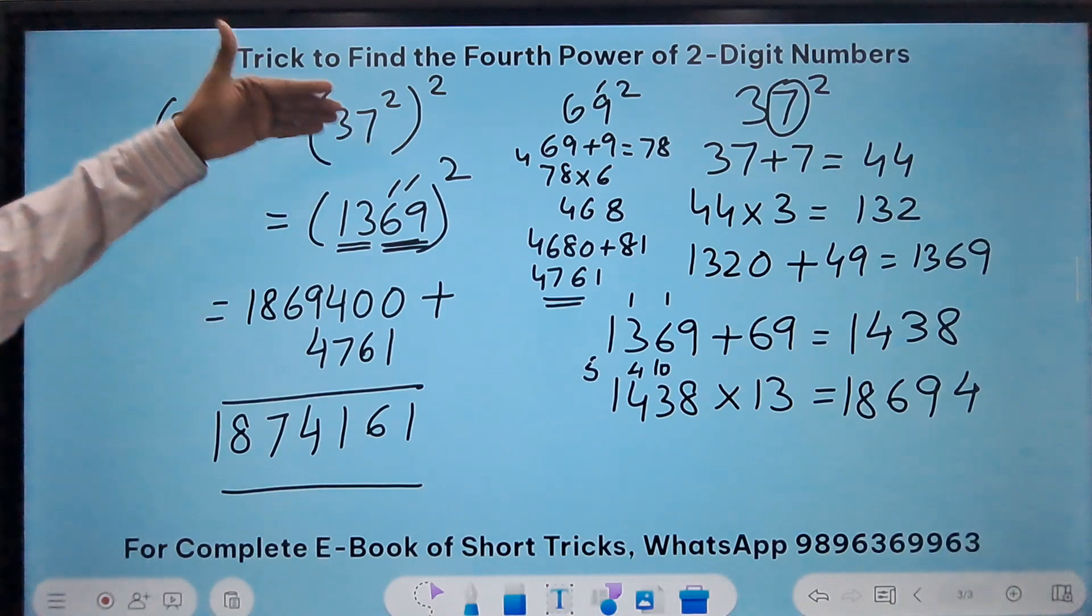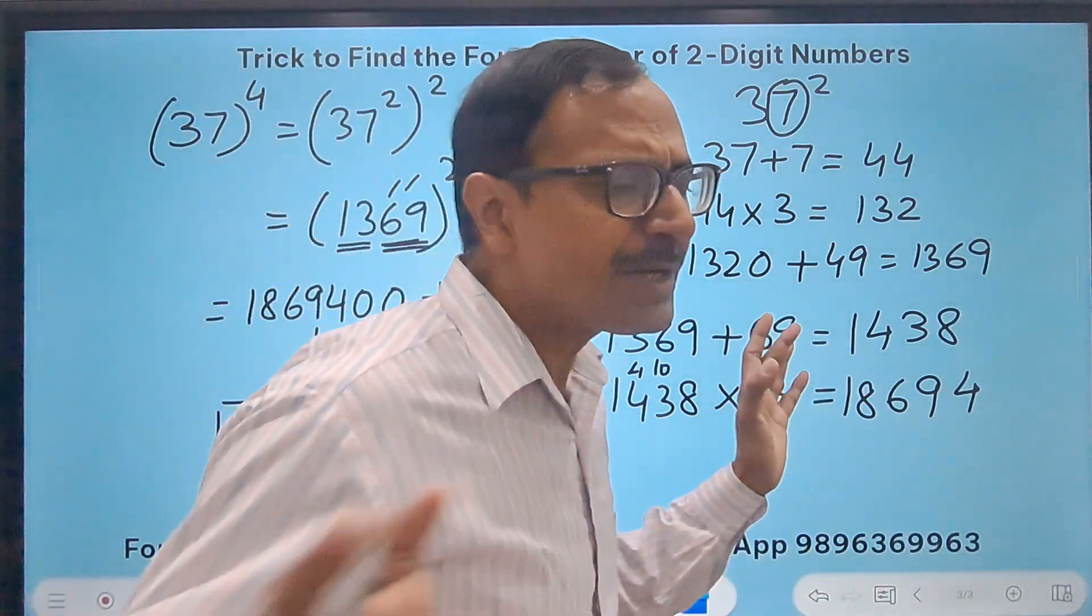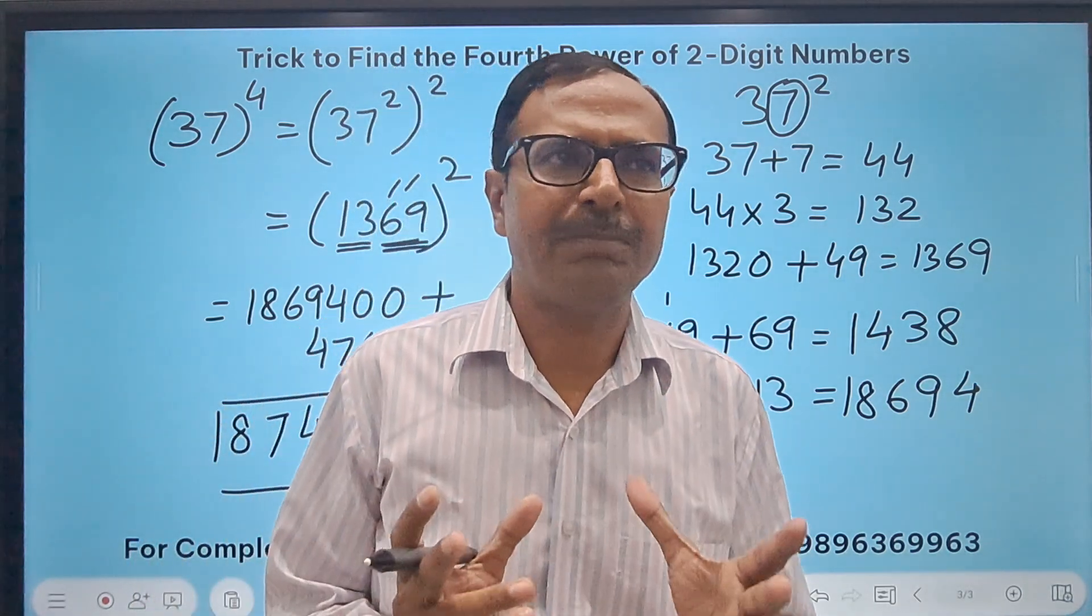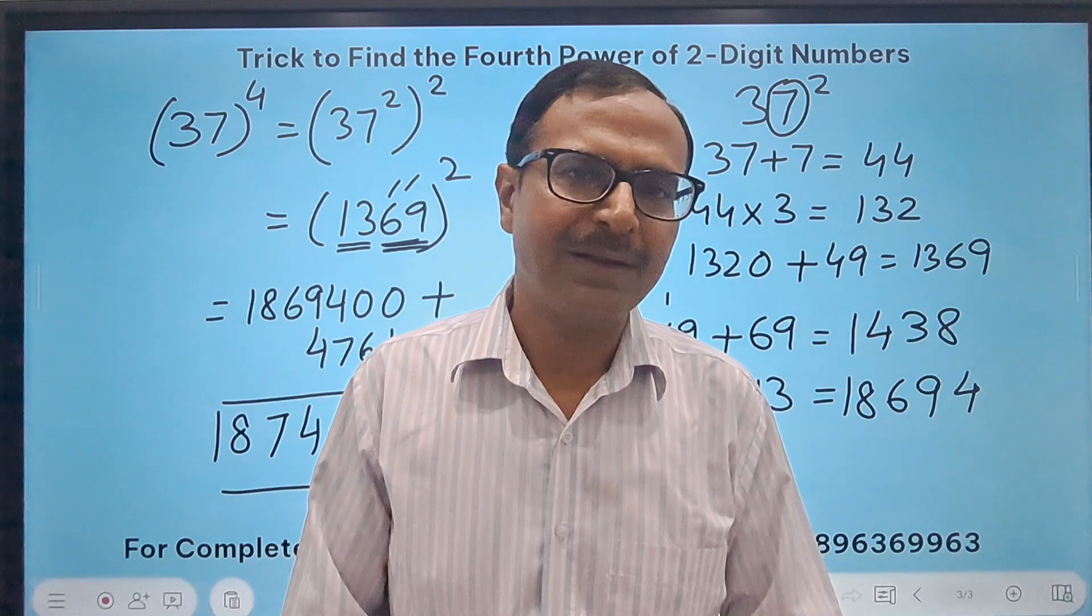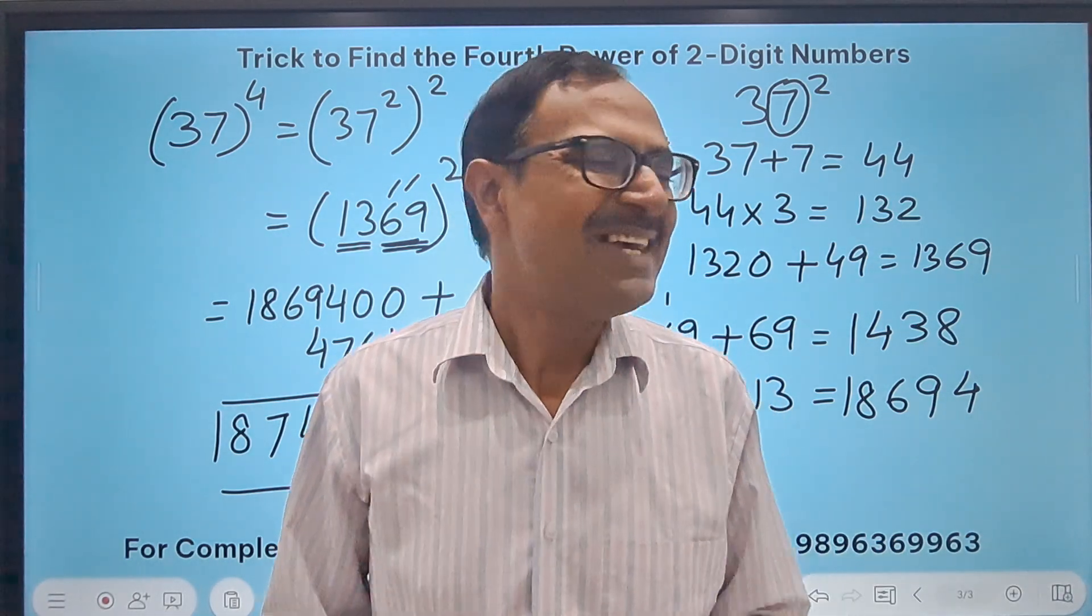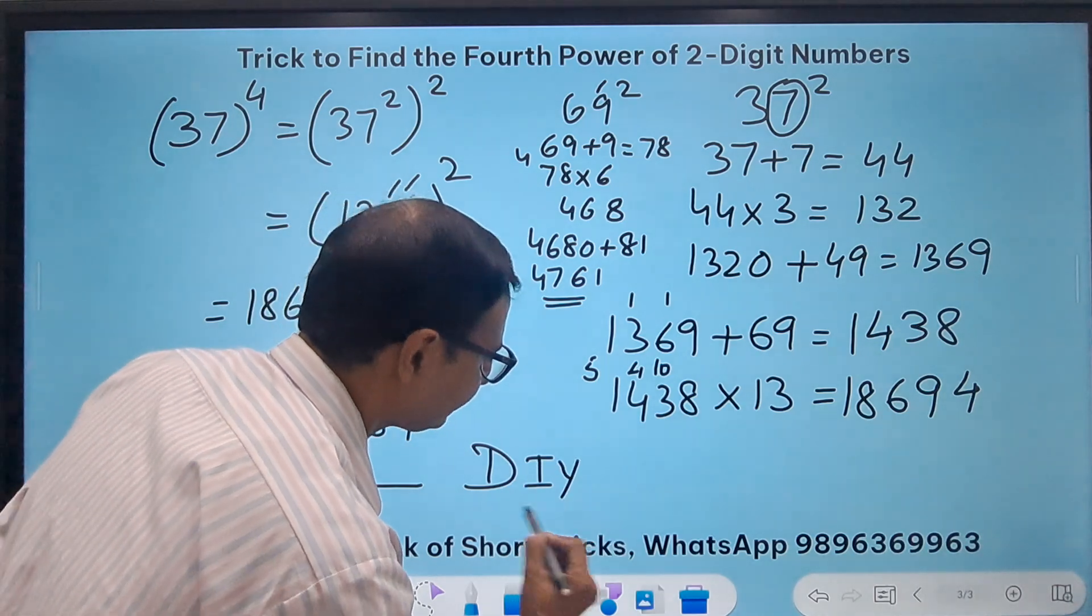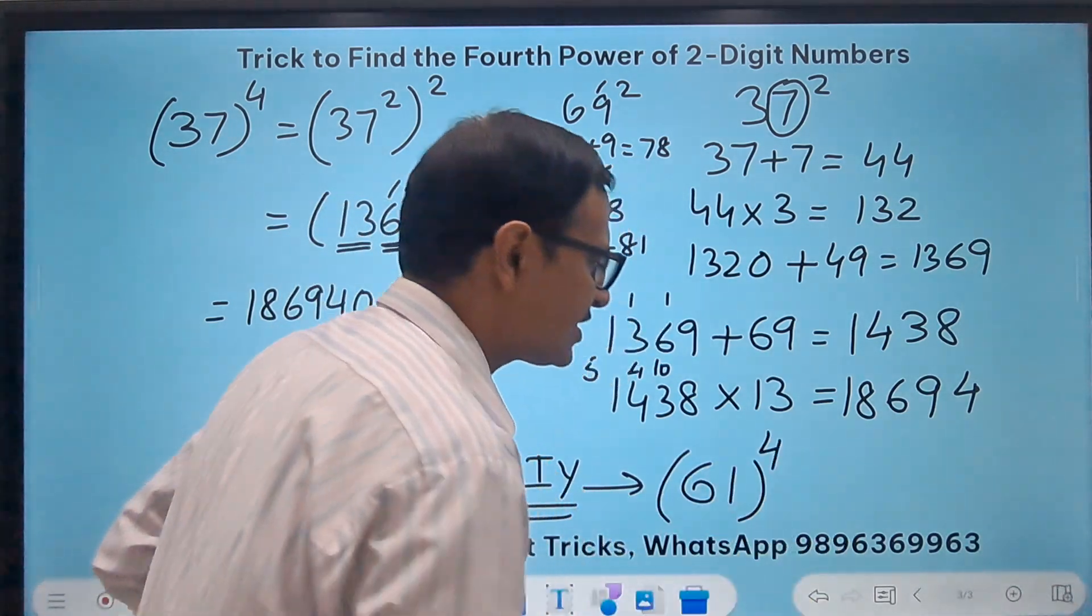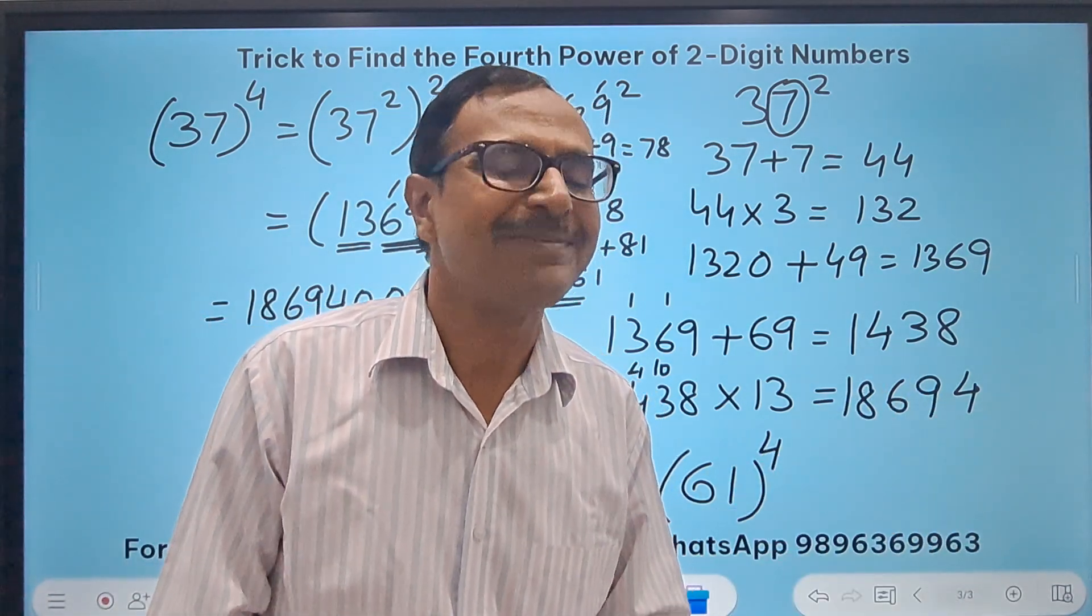Friends, the method is not at all difficult. You just need to practice a little bit. Give it maybe one and a half hours of practice and then tell me in the comments, did it work out? I'll give you a DIY question—do it yourself. Tell me what is 61 raised to power 4 using this method and post your comments here. I'll surely reply to your comments. All the best.